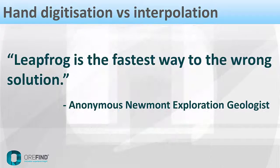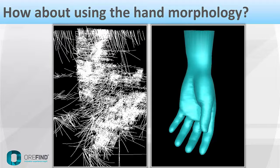Some people have said that leapfrog is the fastest way to the wrong solution, and I tend to agree — the wrong solution being a non-geological solution. Geologists can tell by looking at the model whether it's right or wrong, because some are completely unrealistic in terms of geology. So I thought about this modeling process, and there is a different way of modeling — taking into consideration the expected morphology. We know, for example, what we're trying to construct. If a mineral deposit looked like a hand, you can actually incorporate the hand morphology into the modeling process. Effectively, you're using a training scheme to do the modeling.